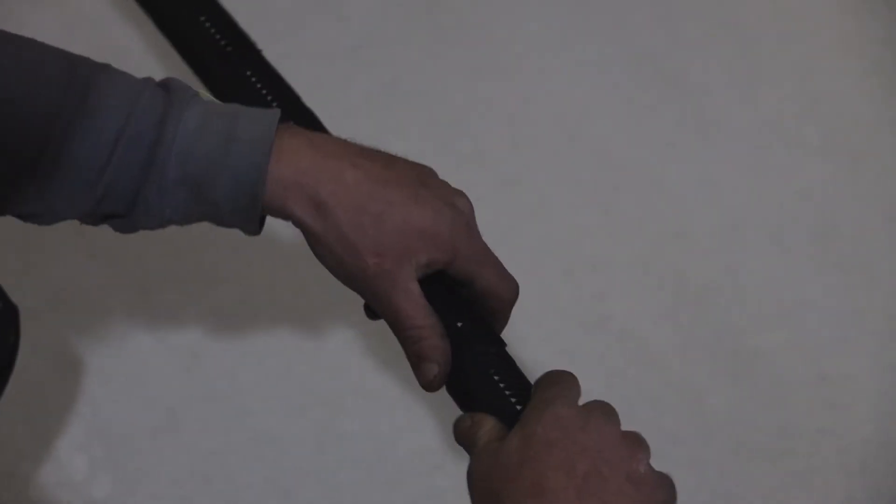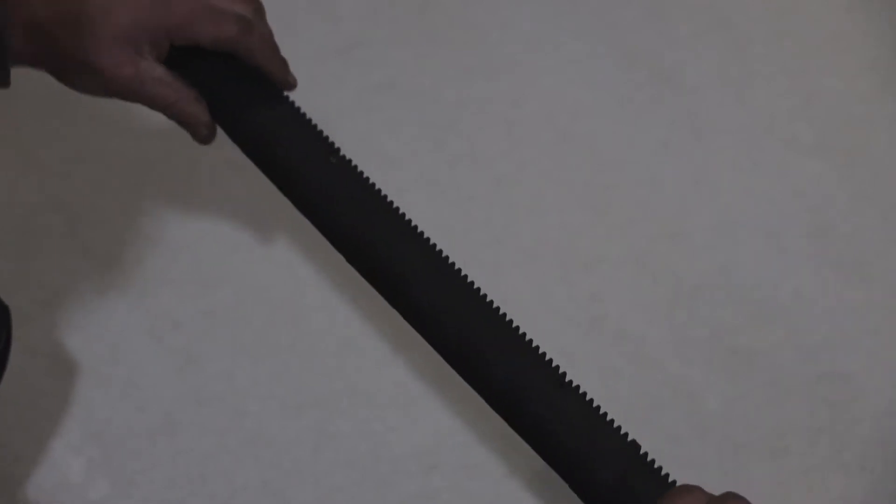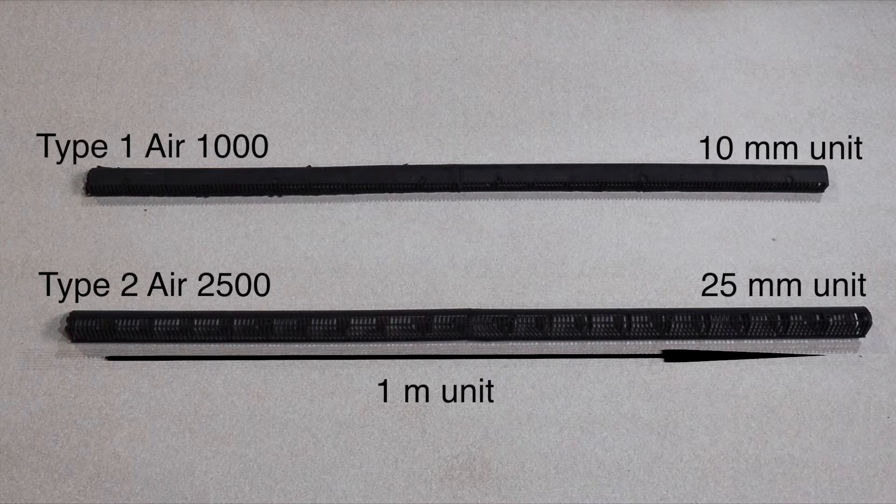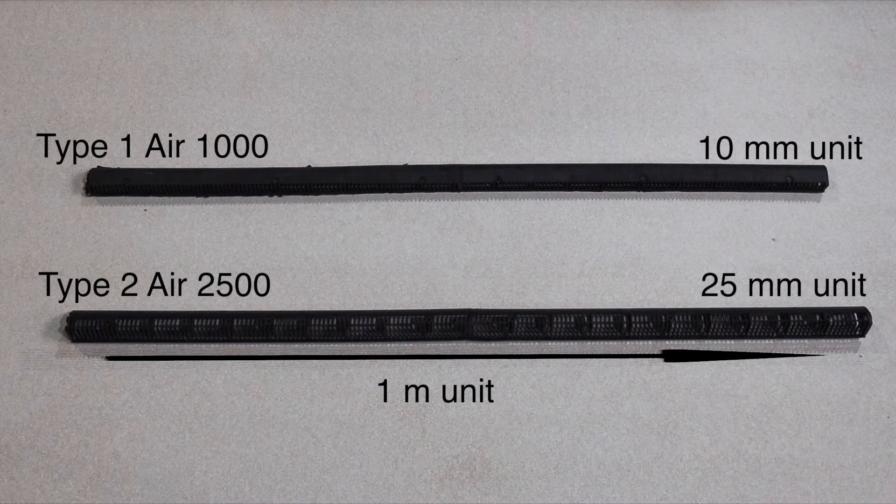These are both made from a lightweight yet very strong polypropylene and come in 1m long units. The first type, Air 1000, is a 10mm unit which will provide 10,000 mm² of airflow per linear meter. It is normally used where a ventilation of 10mm continuous opening is required.